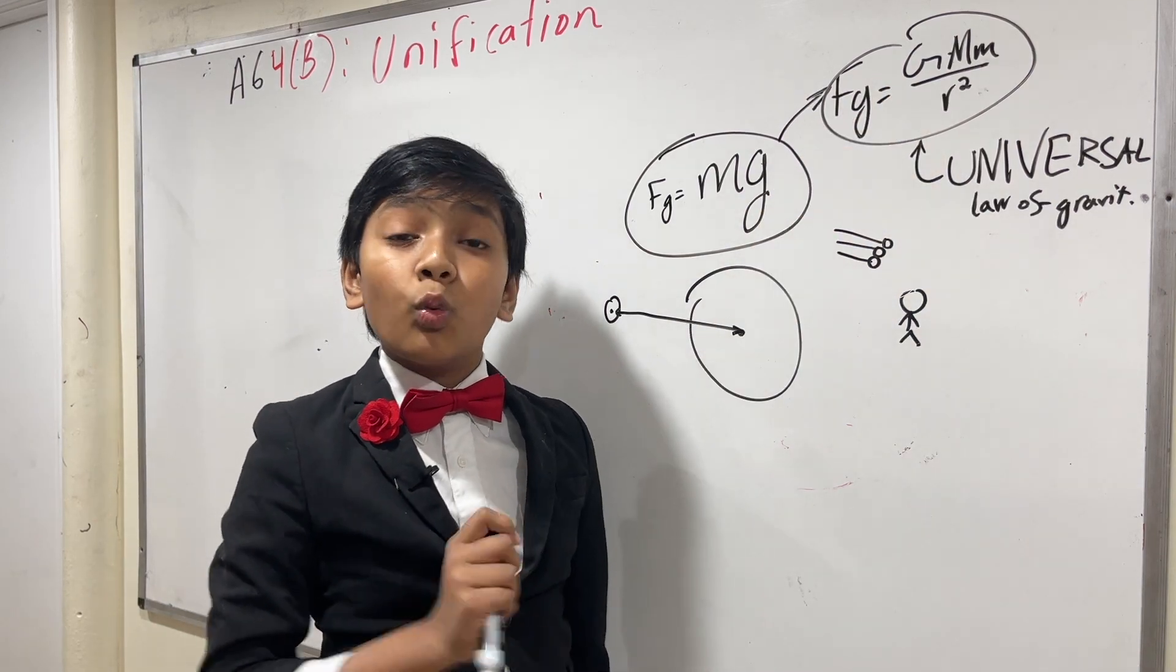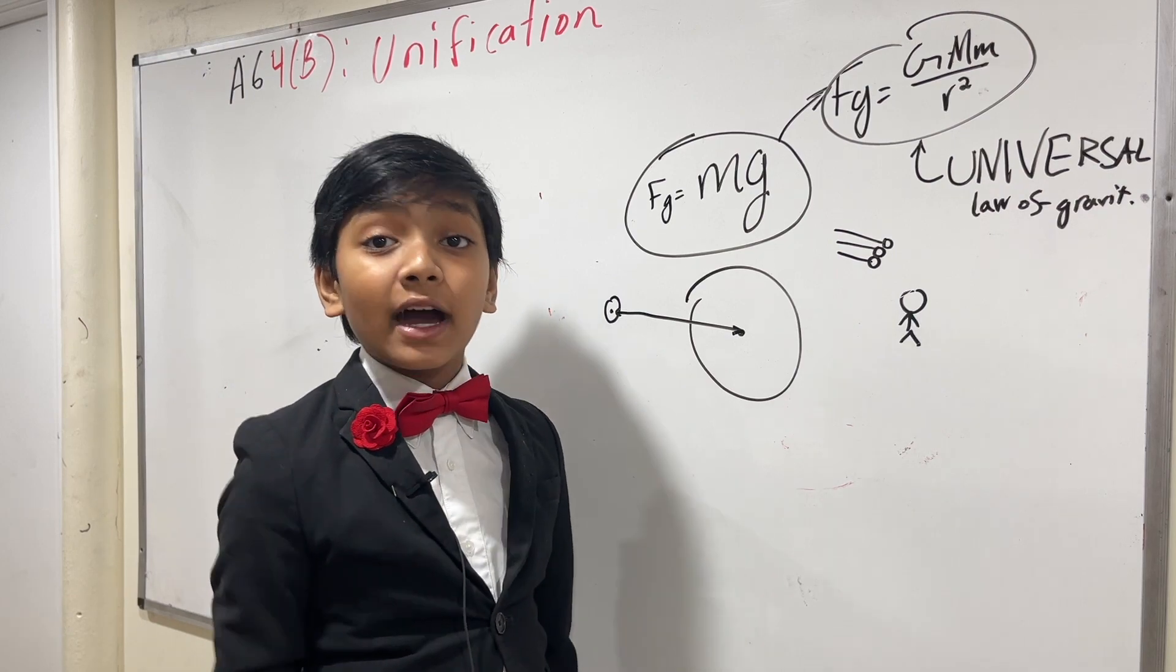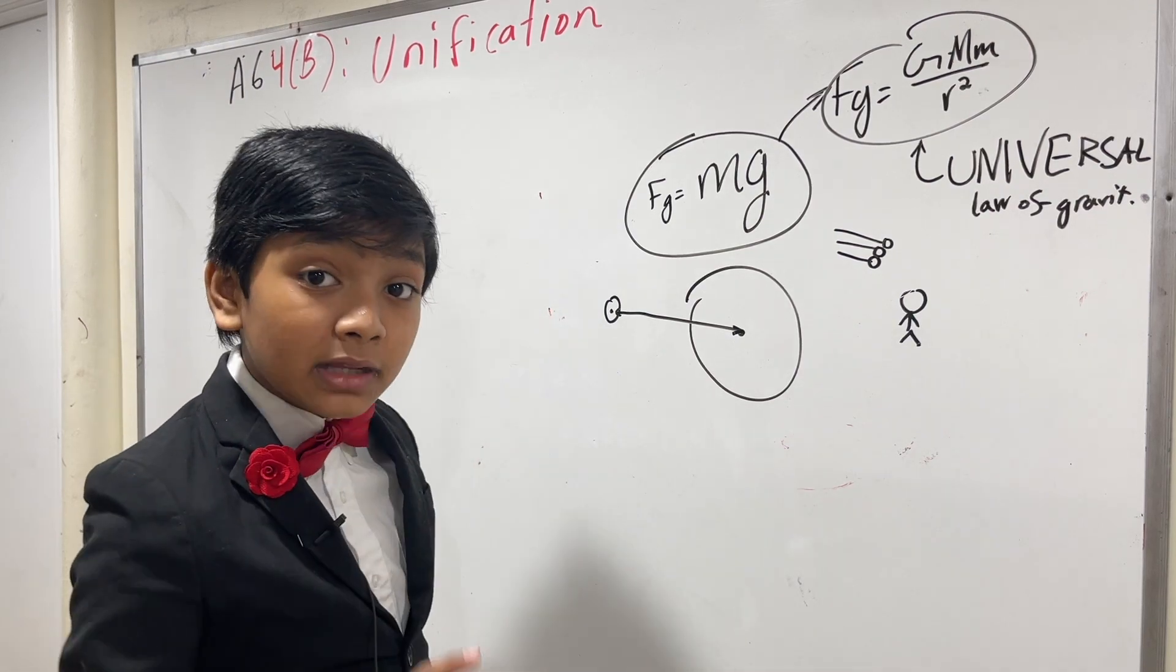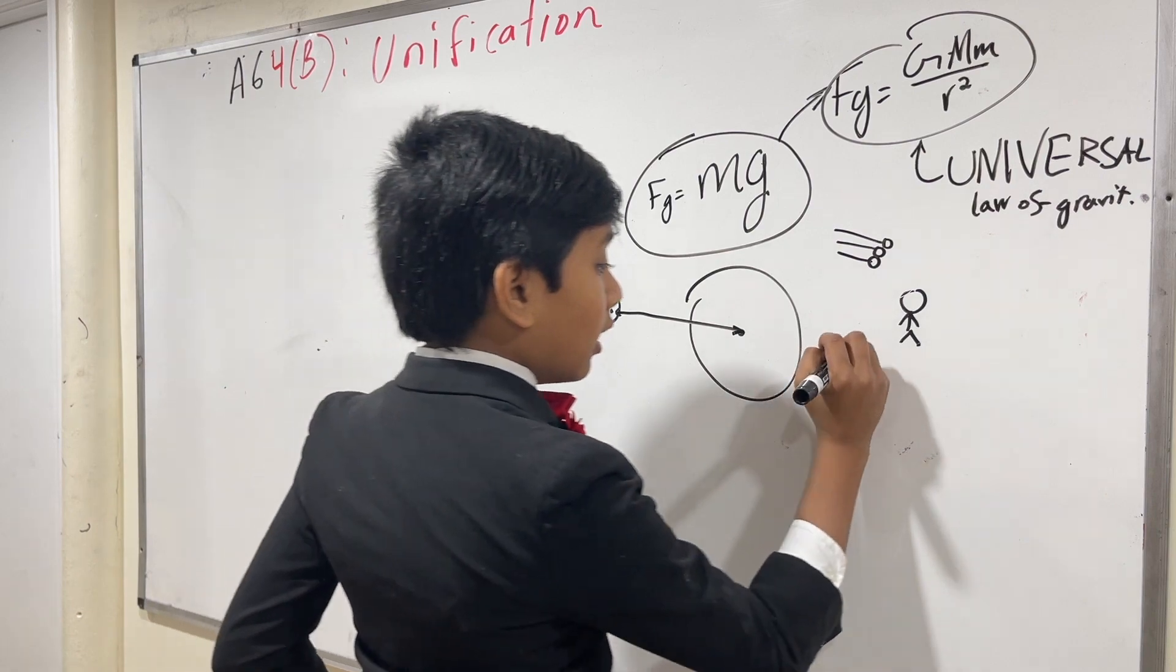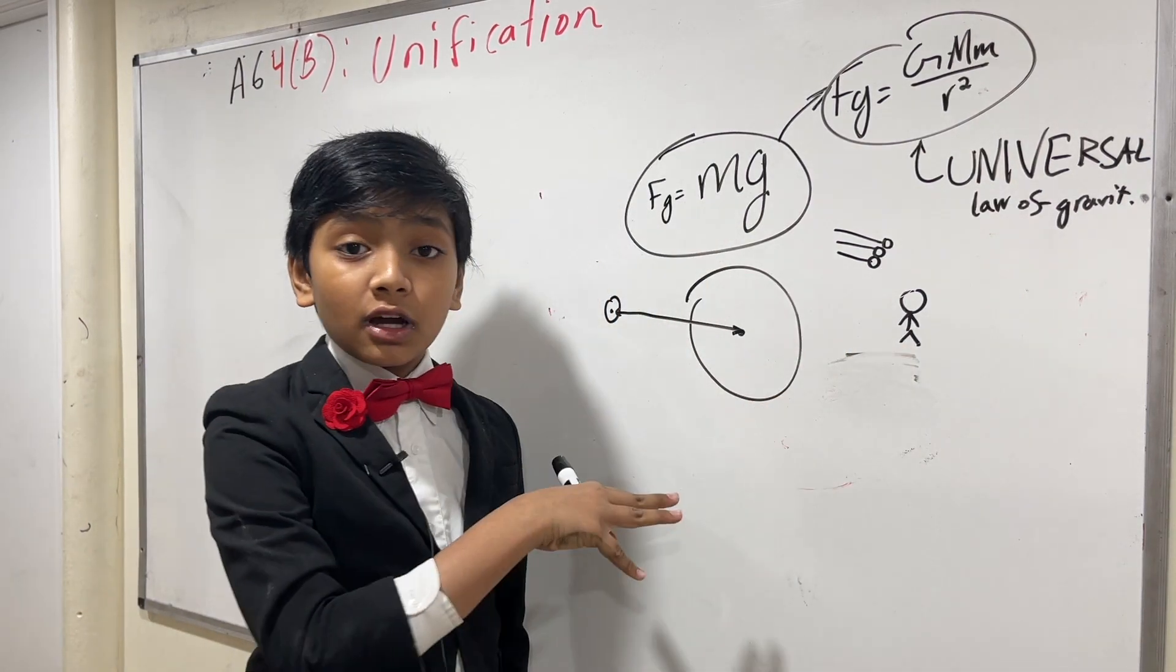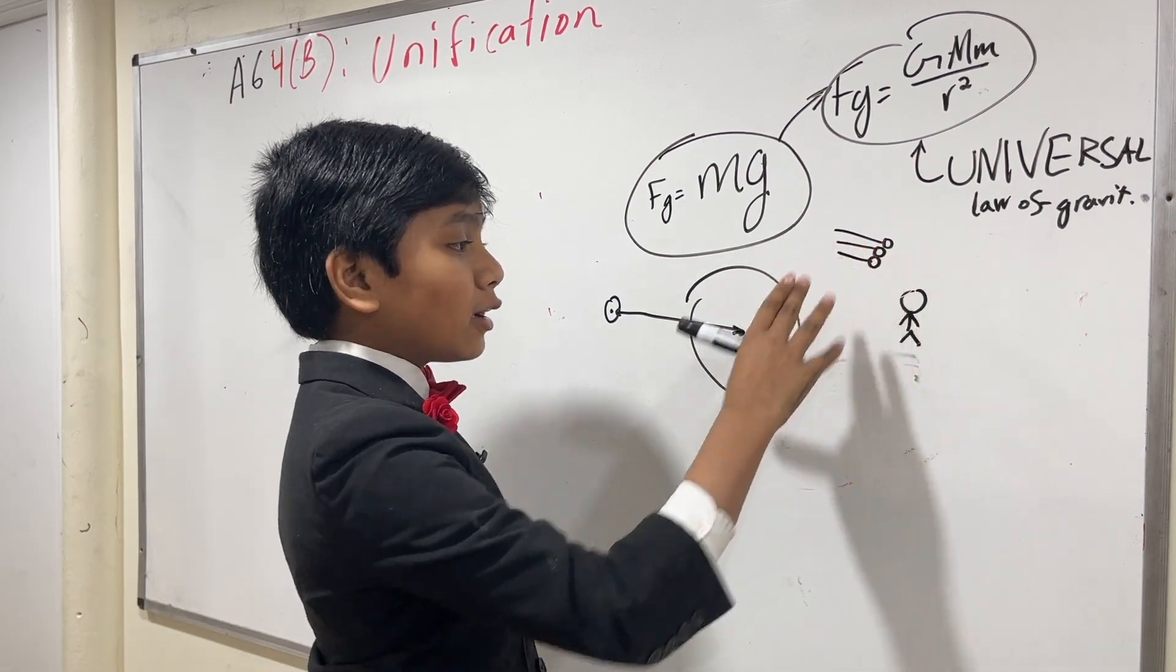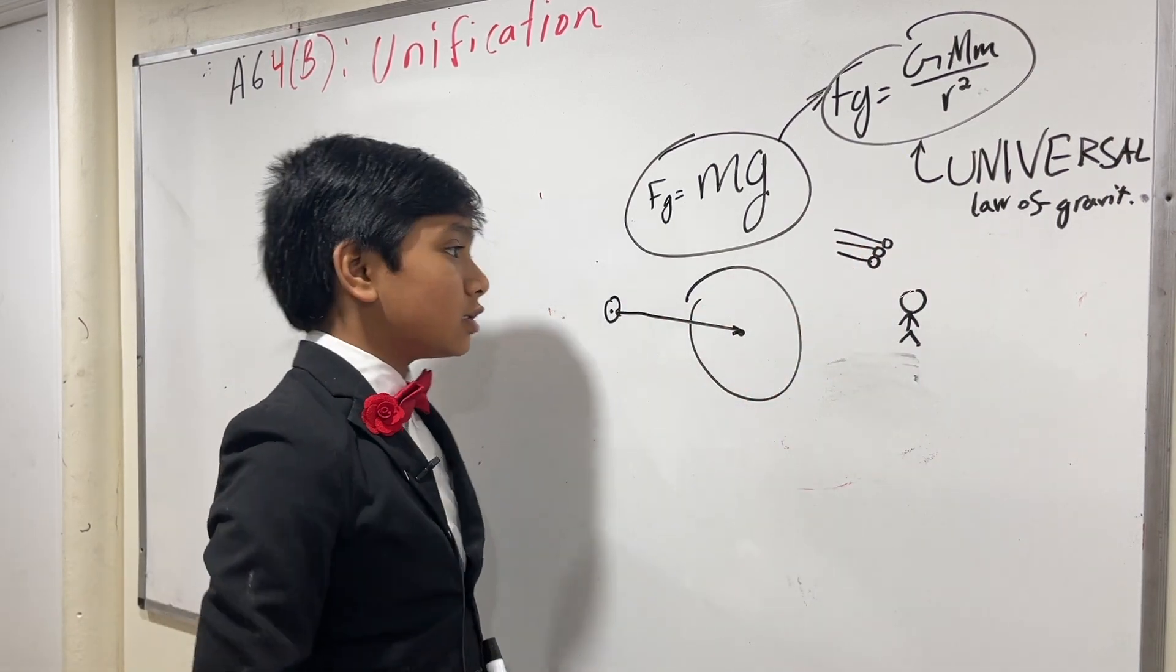he could predict where any astronomical body would be at any time, which was mind-blowing at the time of the 1680s. Because this was a revolution. No one understood what was going on up there, but Newton had found a solution to that.